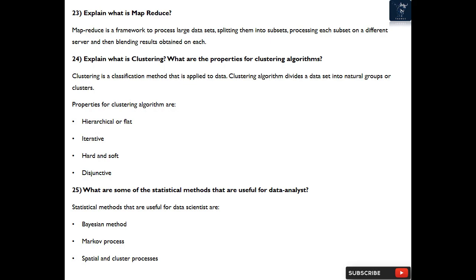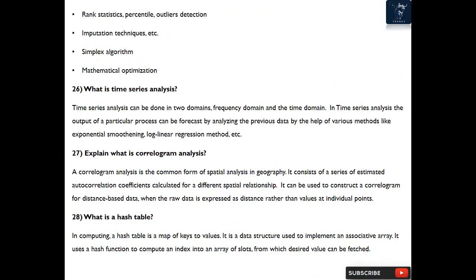Question 25: What are some of the statistical methods that are useful for data analyst? Statistical methods that are useful for data scientist are: Bayesian method, Markov process, spatial and cluster processes, rank statistics, percentile, outlier detection, imputation techniques, simplex algorithm, mathematical optimization.